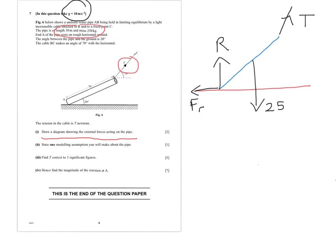As stated in the question, g is going to be 10, so we'll write down 2500 Newtons straight away. I've marked on the important pieces of information. Remember, it's important to label each part of the question, so we'll put part one — and there we have the forces acting on the pipe.